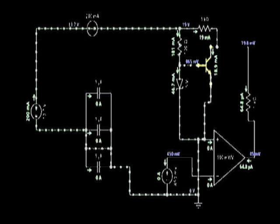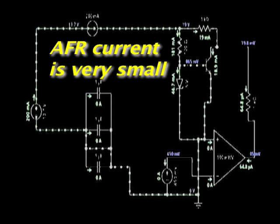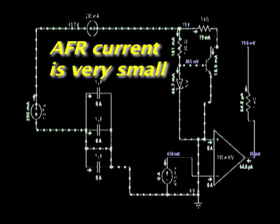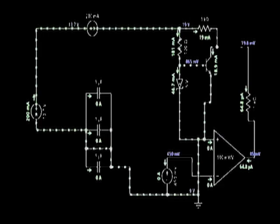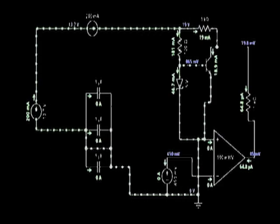This AFR sensor circuit is in effect a differential amplifier that handles very small amounts of current. There is usually no dedicated chip in these circuits, and the operations are carried out using normal discrete components.